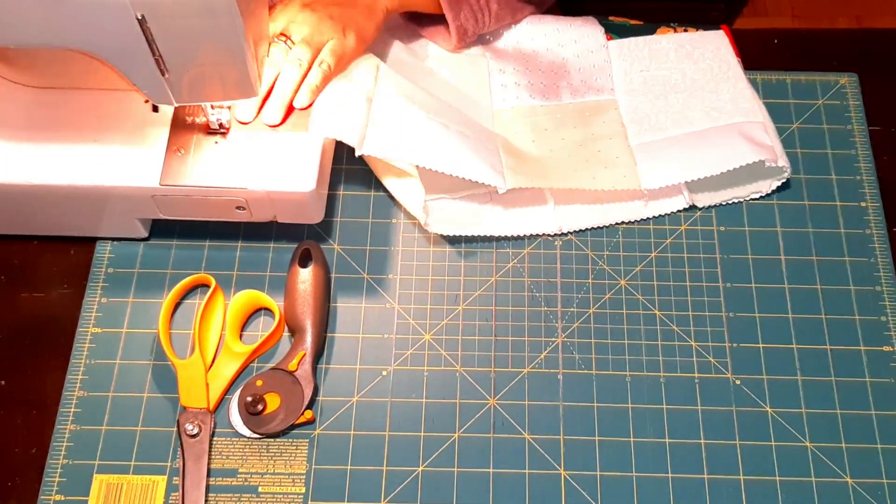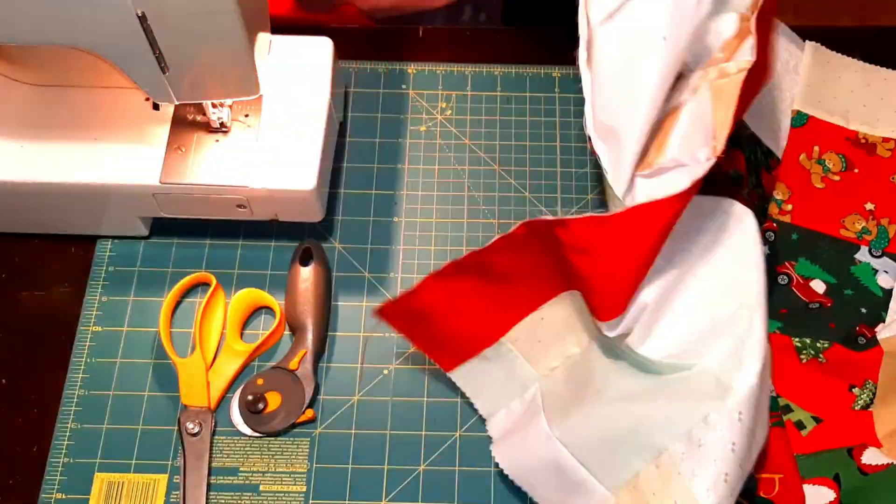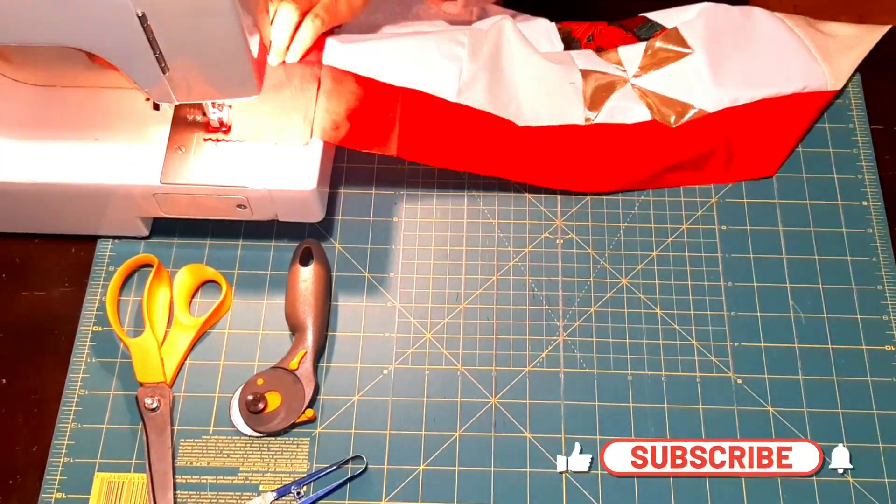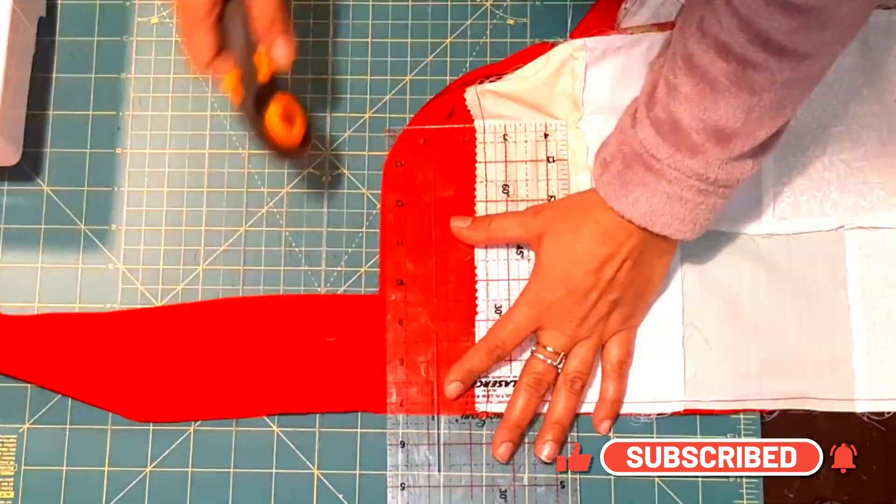I trimmed the border fabric down to size and then I placed it right sides together with my block, and I sewed it all together using a quarter inch seam allowance, and then I trimmed the ends and squared up my block.